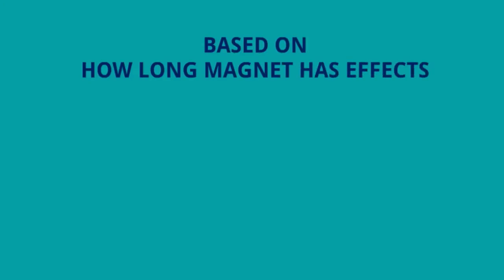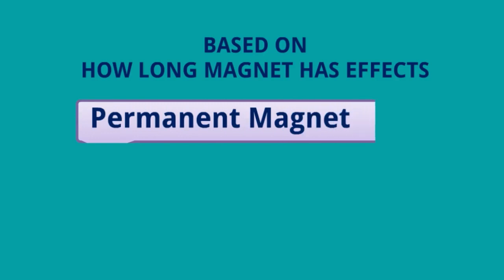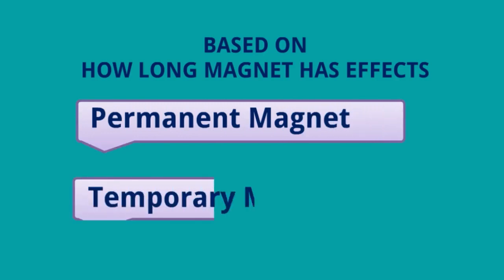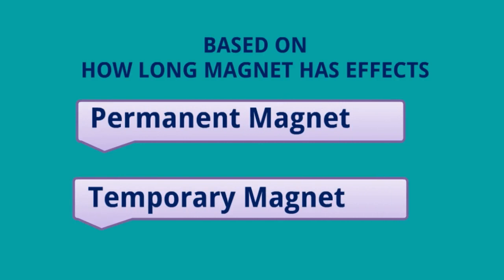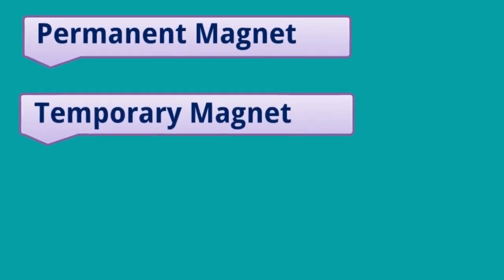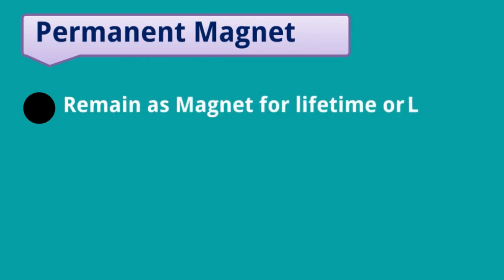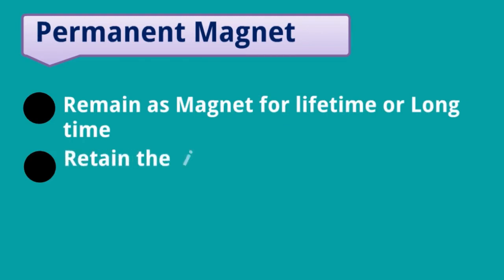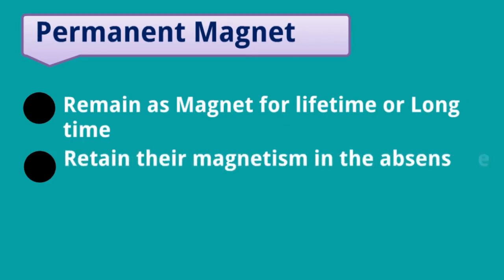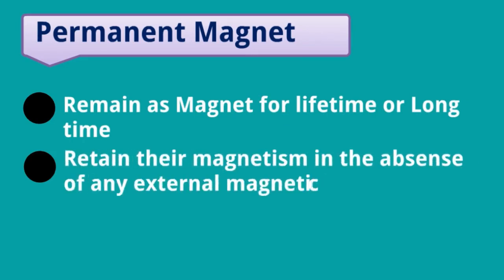However, there is one more type of classification — that is, how long a magnet has its effects, or how long a magnet retains its characteristics. Based on this, magnets are classified into permanent magnets and temporary magnets. Permanent magnets remain as magnets for a lifetime or very long time.